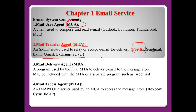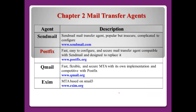Number three: MDA — mail delivery agent — normally used by the final MTA to deliver email to the message store. This means when the MTA receives email, the MDA delivers it to the user's home directory. Number four: MAA — the IMAP and POP3 server — used by the MUA to access message stores. In this part I will use Dovecot.